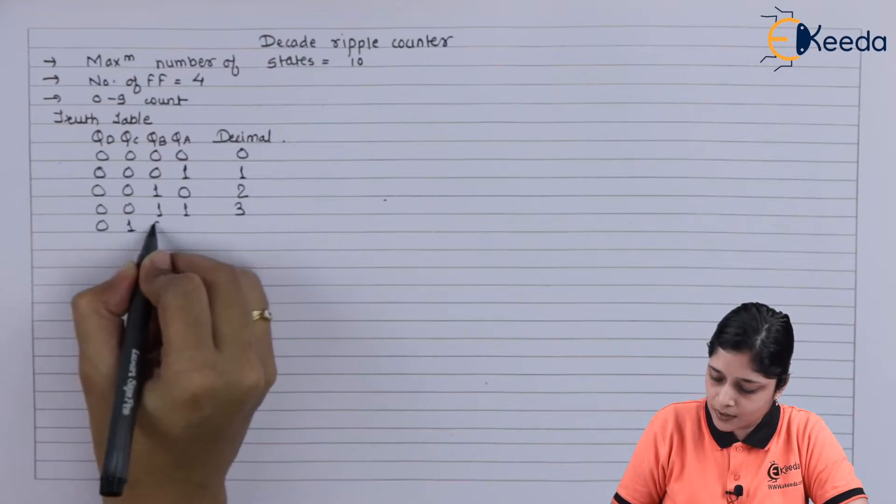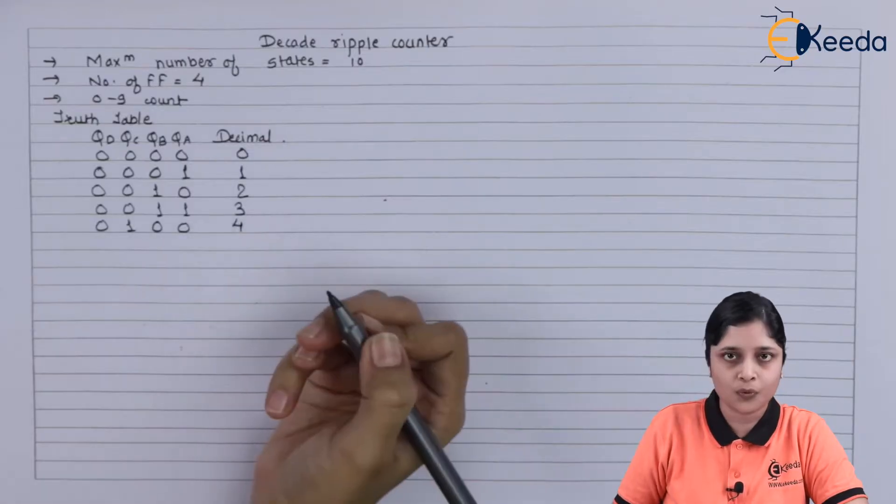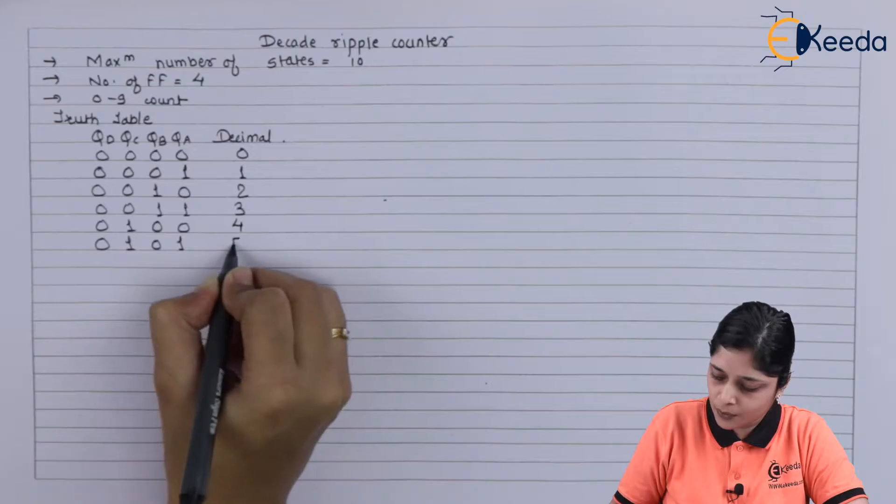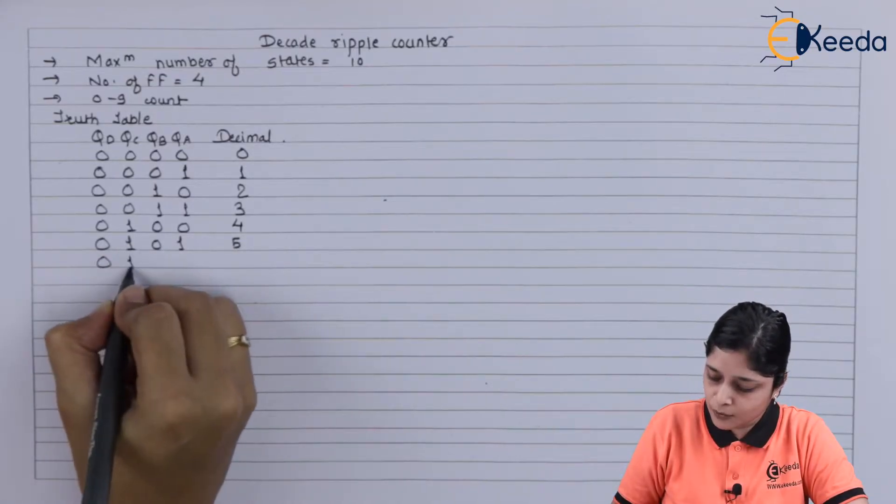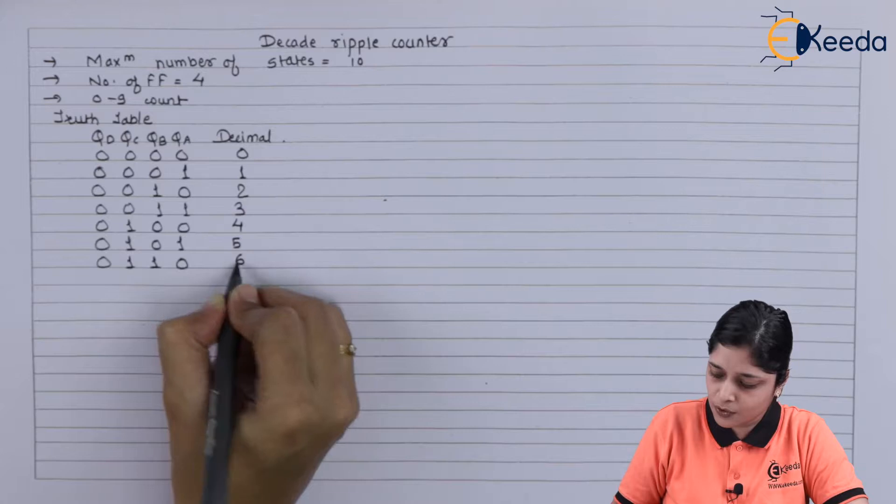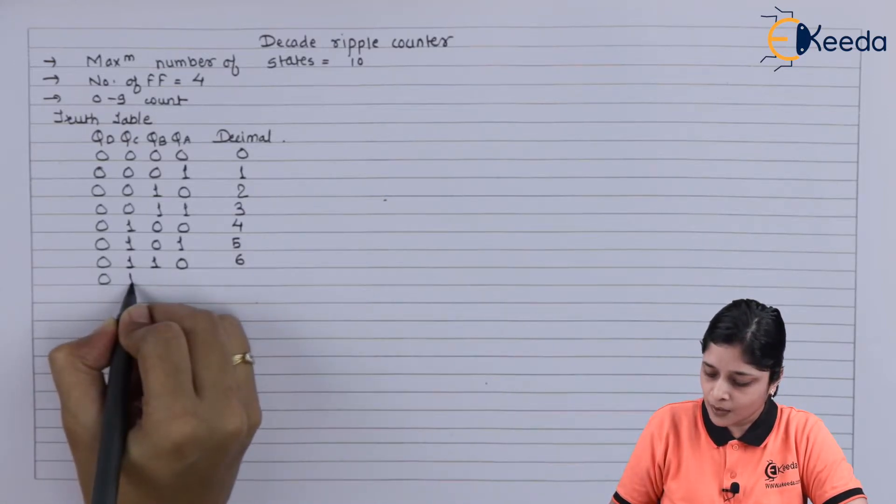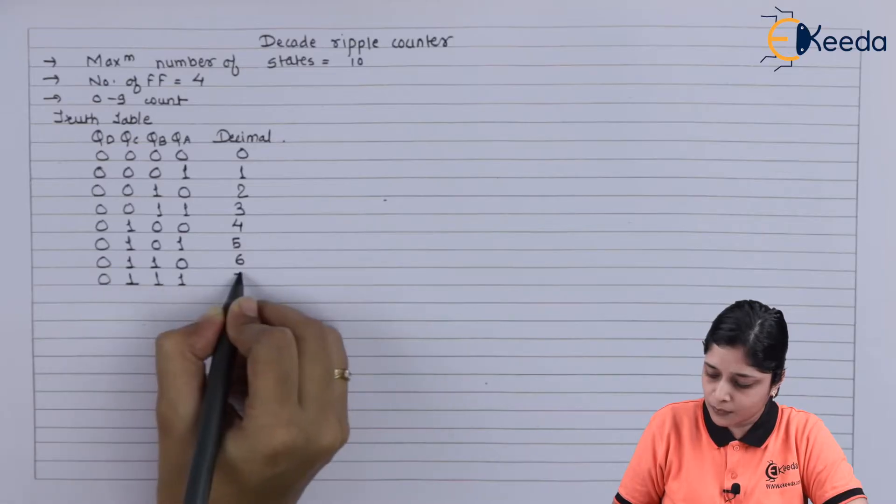0100, this is for 4. 0101 for 5. 0110, this is for 6. After that, we have 0111 for 7.